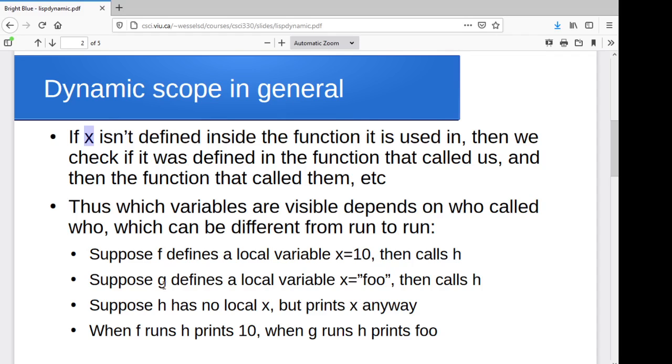So for instance, if you've got a function f and it creates a local variable x and then calls some function h. And let's suppose that h doesn't actually have a variable x in it, but it prints x anyway. Then when f calls h, h goes, hmm, it tries to print x and goes, I don't have an x. Who called me? f called me. Hey, f, did you have an x? And if so, then it prints that 10.